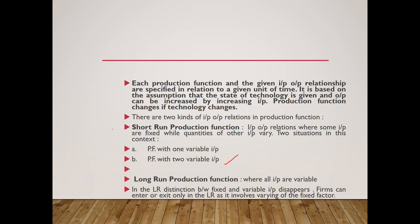Number one is short-run production function. Short-run production function means an input-output relation where some inputs are fixed while others are varying. Two situations in this context: number one, production function with one variable input, and production function with two variable inputs.